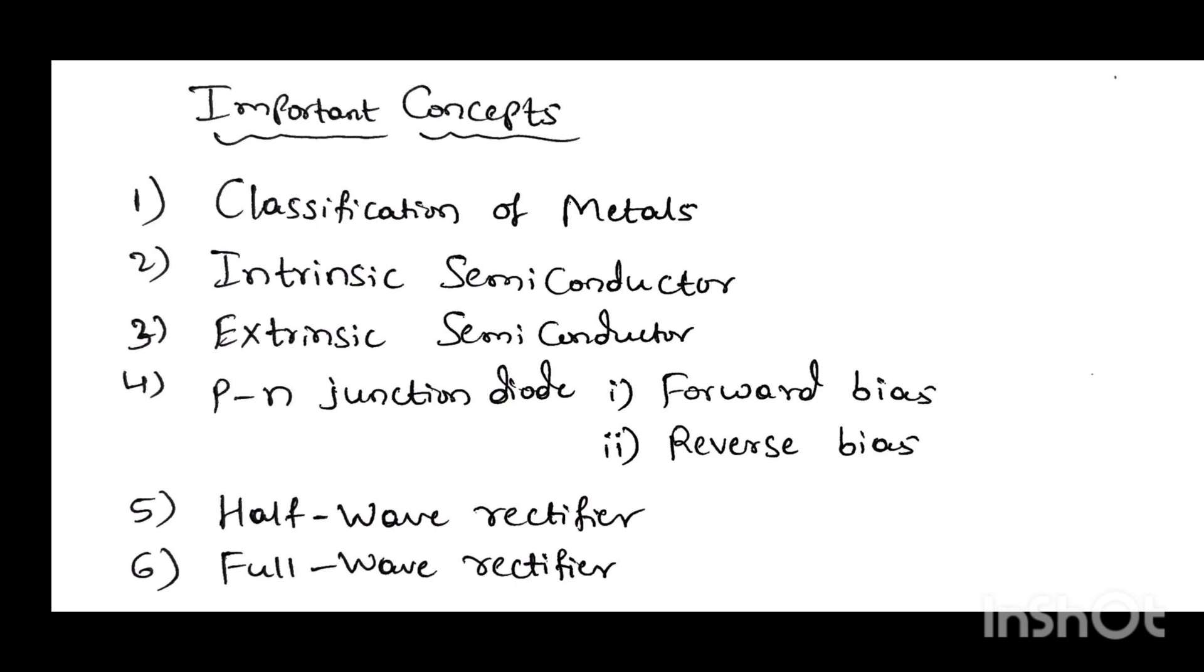Next, the second one is intrinsic semiconductor. Third one is extrinsic semiconductor. Next is PN junction diode. In that, there are mainly two cases: forward bias and reverse bias.